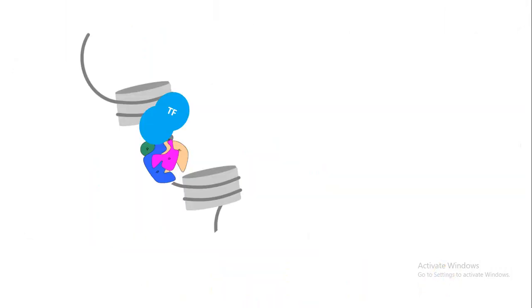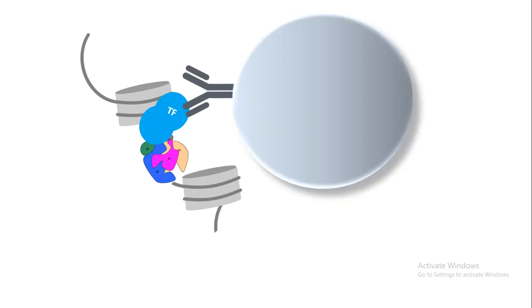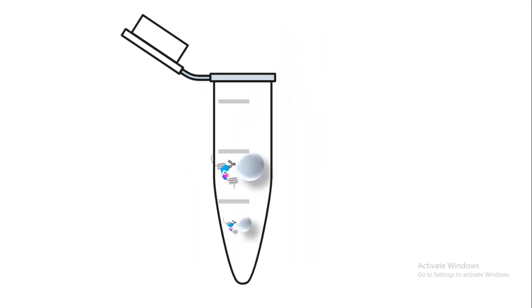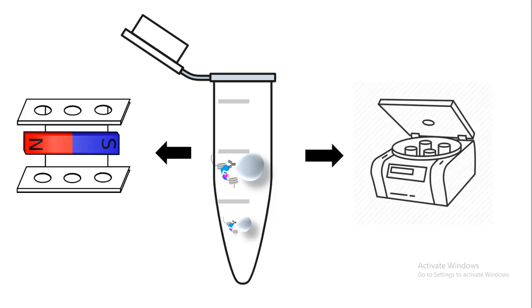In ChIP-seq, our transcription factor is bound to its desired DNA sequence. We shear the DNA so that the chromatin becomes fragmented, and we use an antibody against that transcription factor and couple that antibody with a sepharose or a magnetic bead. After that, the pull-down fraction is pulled down using a centrifuge or magnetic separation.